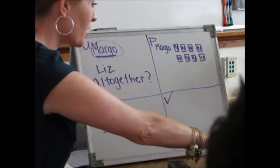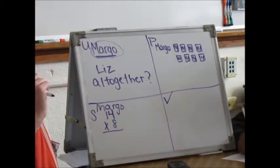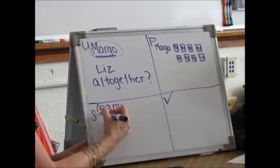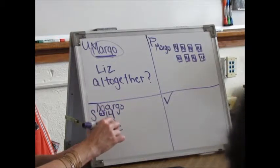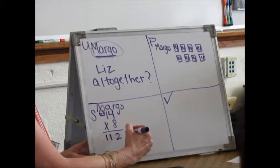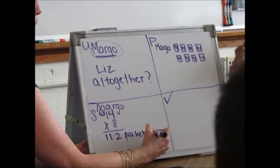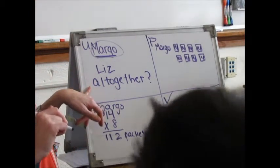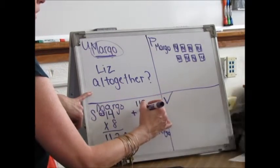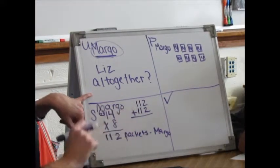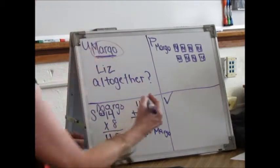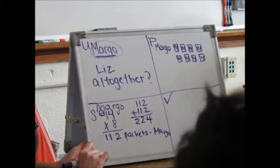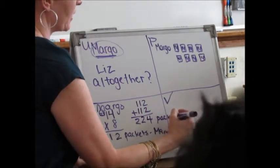Our answer is 112 — but is that our final answer? No. We've only figured out Margo. We've got to figure out all together. So how do I figure out all together? Double it — I can add 112 to 112, or I could do 112 times 2. I'm going to add because I like that one better today. So how many packets all together? 224 packets all together.